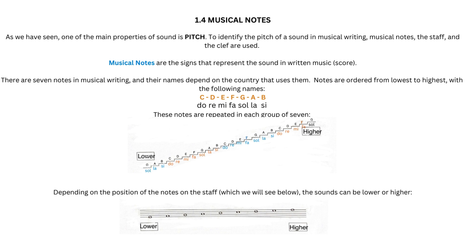Musical notes are the signs that represent the sound in written music (score). There are seven notes in musical writing, and their names depend on the country that uses them.